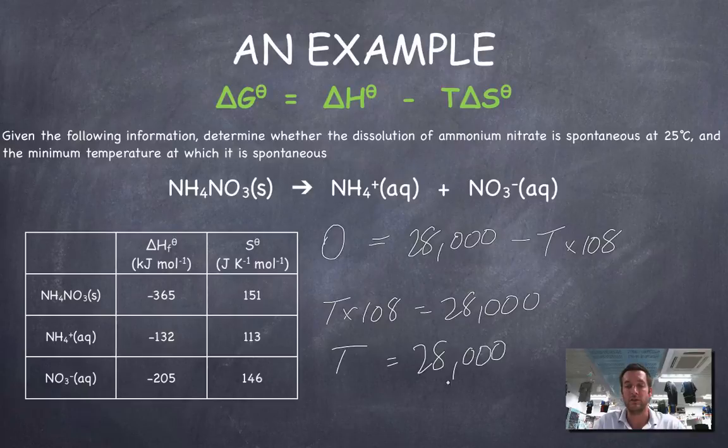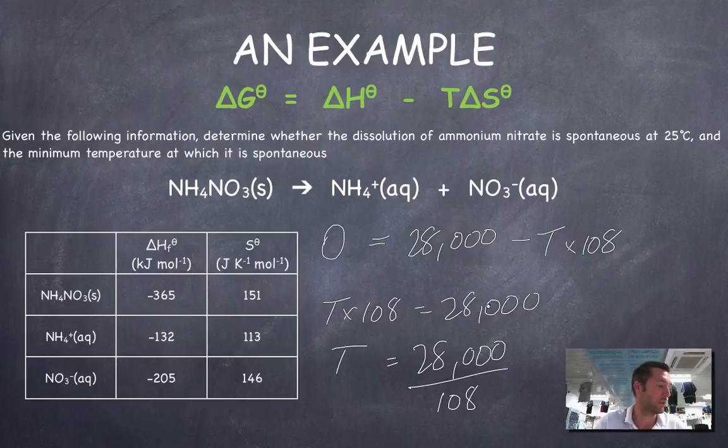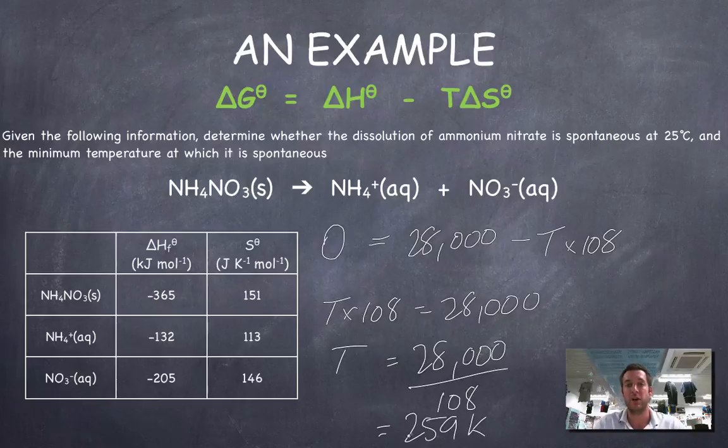Therefore, T equals 28,000 over 108, which is 259 Kelvin. Any temperature higher than that and it will be spontaneous. Any temperature lower than that and this entropy change product won't be big enough to turn ΔG into a negative number.